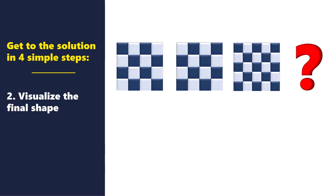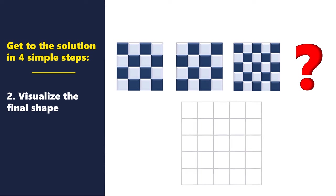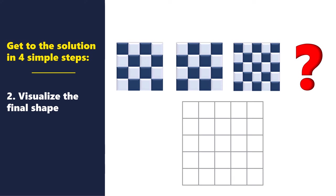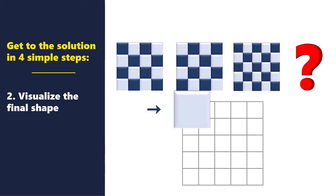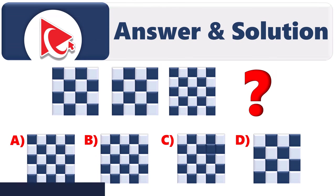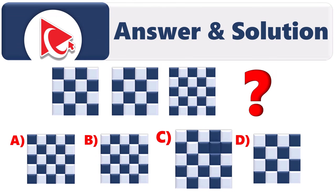The first shape starts with the darker square in the upper left corner, and the second square starts with the lighter square in the upper left corner. In step two, we visualize the final shape: it should be 5x5 in size, with alternating colors and a lighter square in the upper left corner. Two choices match this: B and C.